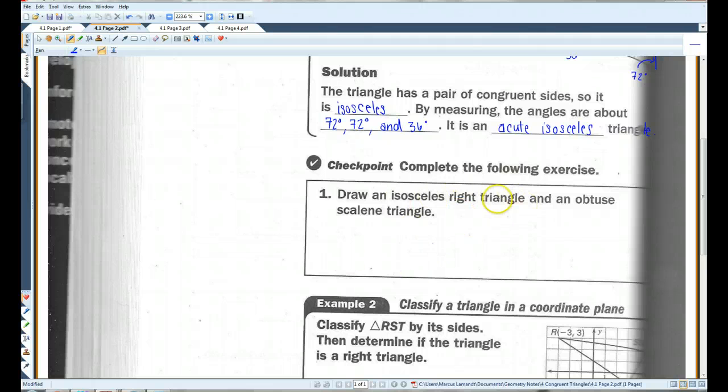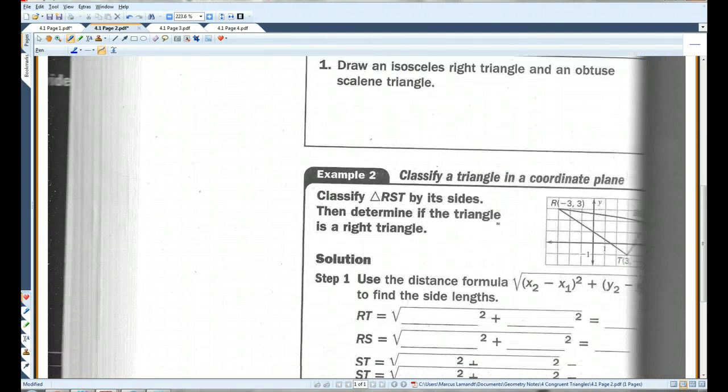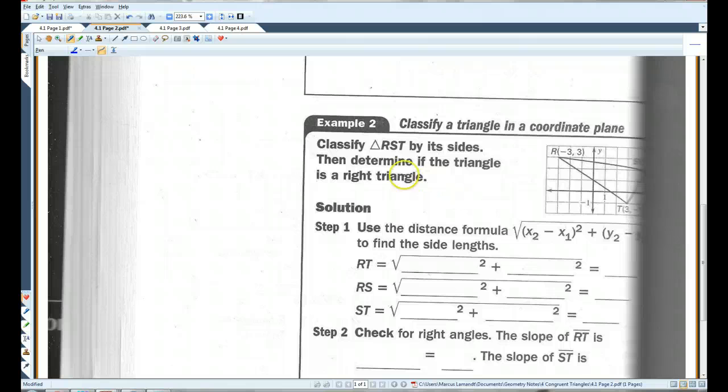I'll let you guys do this one. Example two. Classify triangle RST by its sides. Then determine if the triangle is a right triangle. I'm going to draw in the part that got cut off. This is S and this, let's see here, it's 5,2. And then T, 3, negative 1.